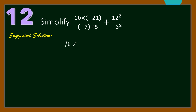For 10 times negative 21 over negative 7 times 5, we can divide 10 and 5 by 5. So we get 10 divided by 5 is 2, and 5 divided by 5 is 1. Also, negative 21 and negative 7 can be divided by negative 7. So negative 21 divided by negative 7 is 3, and negative 7 divided by negative 7 is 1.